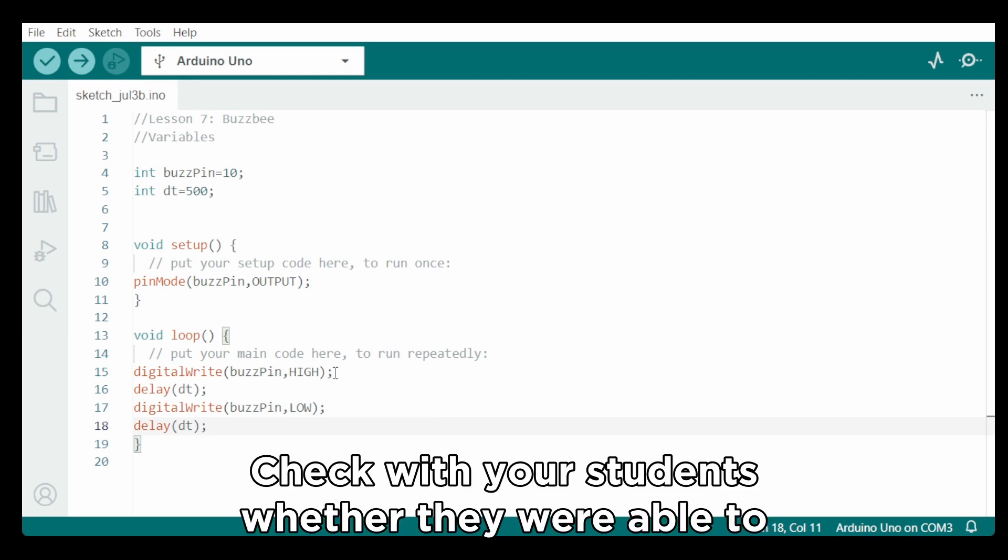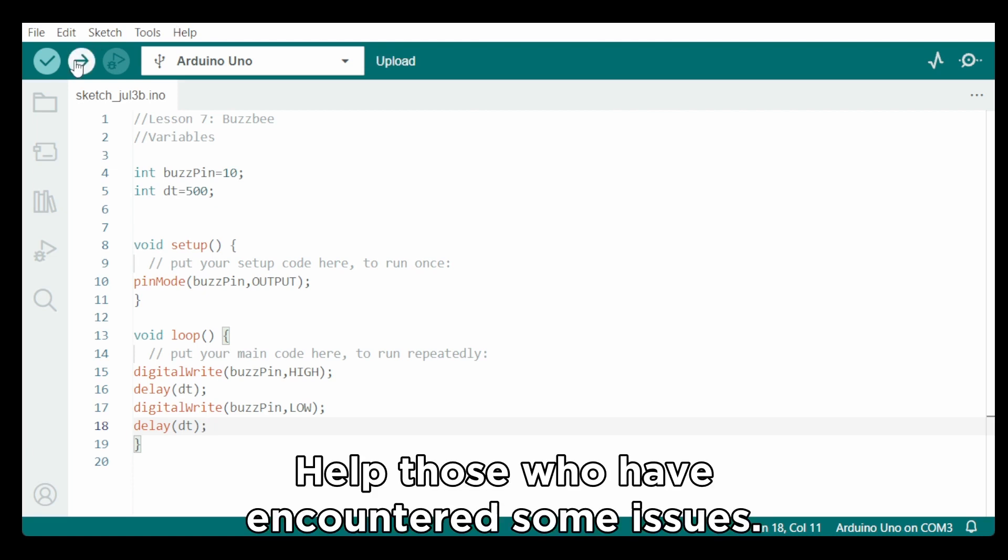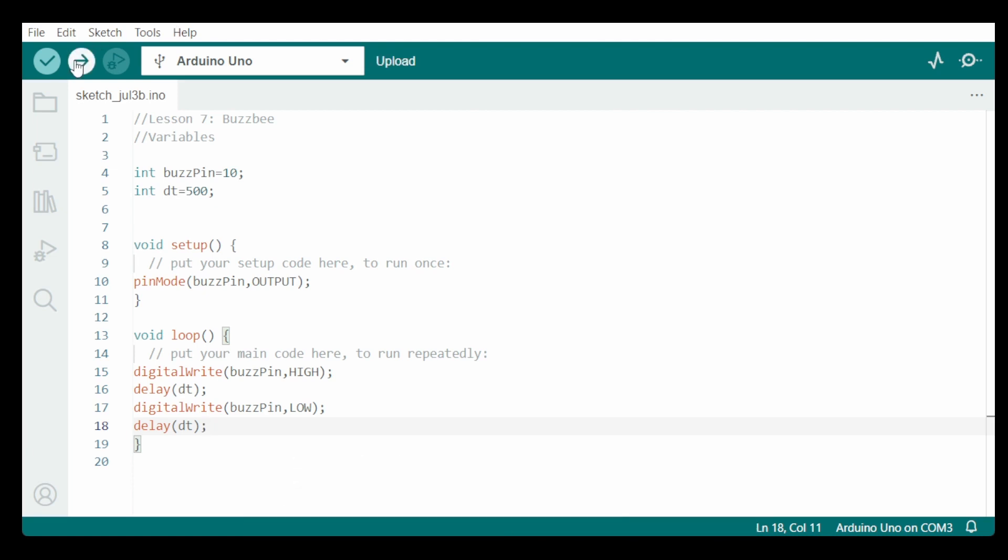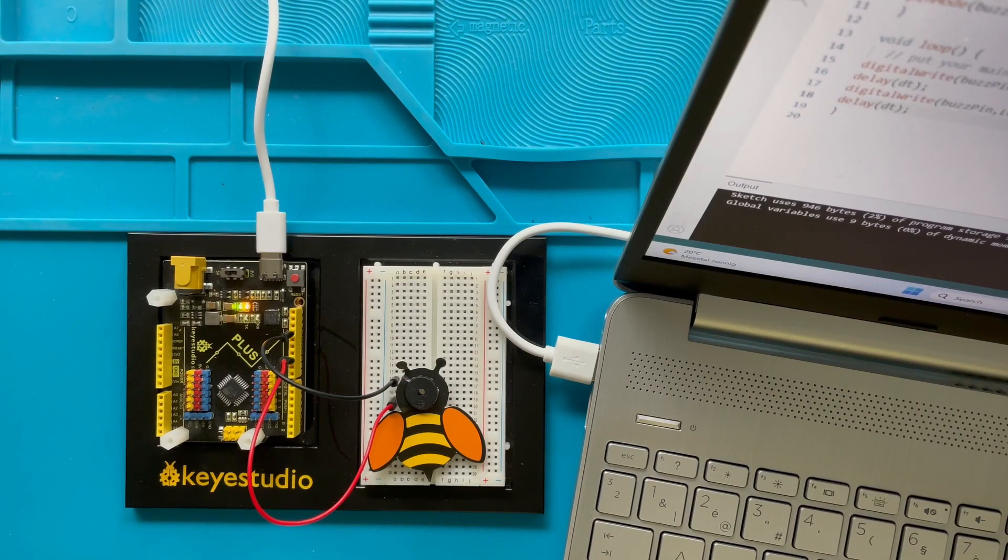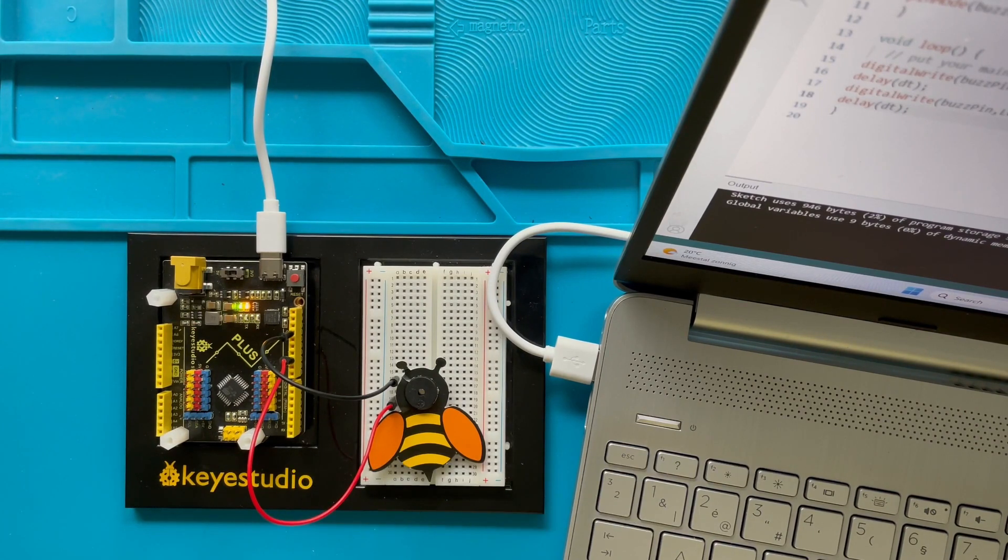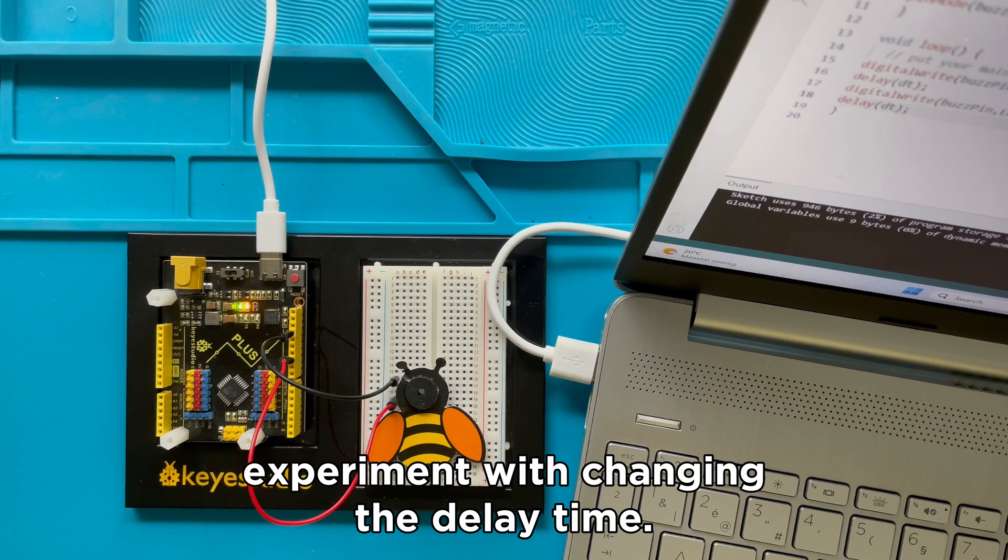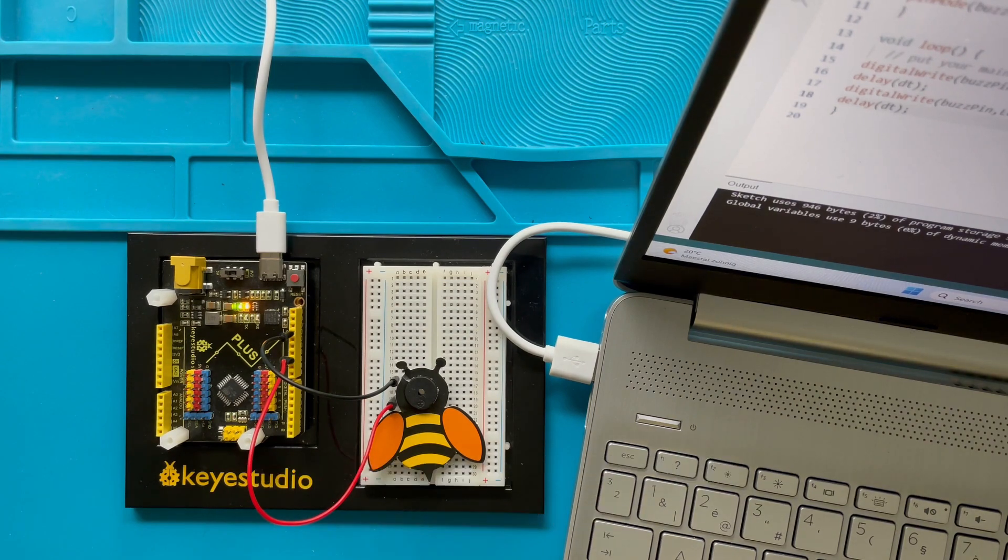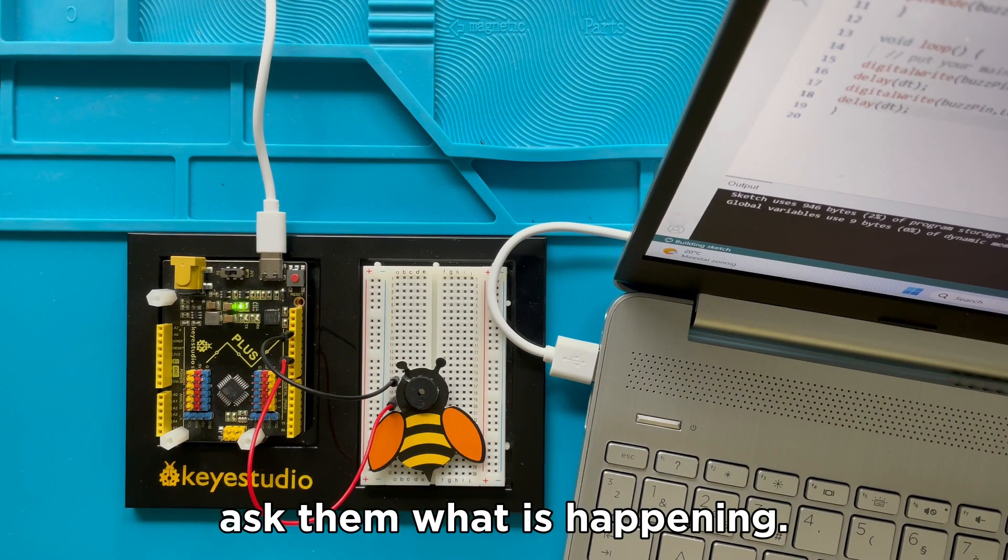Check with your students whether they were able to write the program. Help those who have encountered some issues. Now it's time for them to upload their code. The class should be filled with sounds of the buzzers. Although the active buzzer can only play one sound, you can experiment with changing the delay time. Let your students play around with different delay times and ask them what is happening.